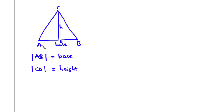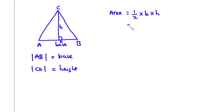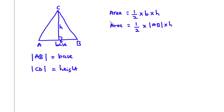CD bisects AB at right angles, so we have this to be 90 degrees. The area of a triangle is given by half times the base times the height. So in this case, we have half times AB times the height. This is the formula to find the area of a triangle.